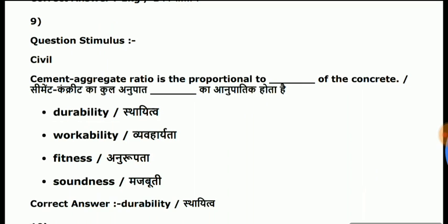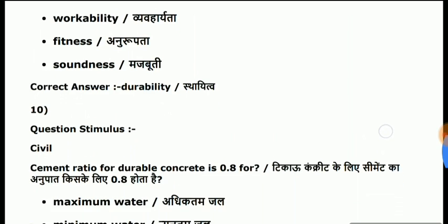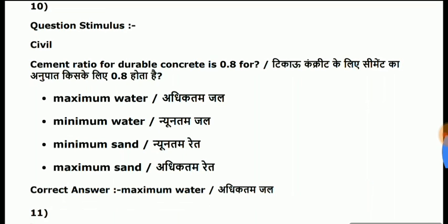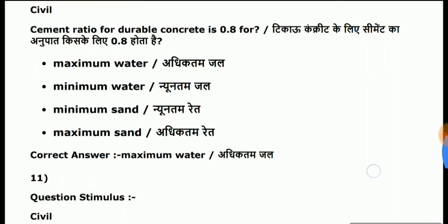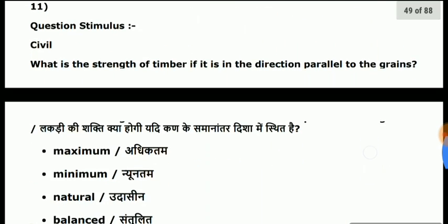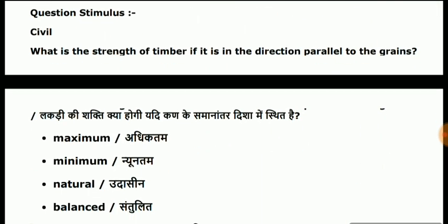Cement aggregate ratio is proportional to 0.8 Newton. Cement ratio for durability of concrete — durable concrete is 0.84. Maximum water-cement ratio for durability.